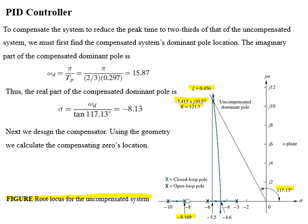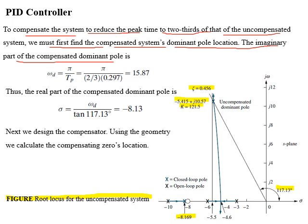We must compensate the system to reduce its peak time to two-thirds of the uncompensated one. The peak time of the uncompensated system is pi divided by 10.57, which equals 0.297 seconds. The new peak time will be (2/3) × 0.297 seconds, so the imaginary part of the new dominant pole location will be pi divided by the new peak time, equal to 15.87.